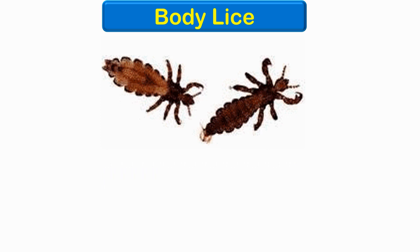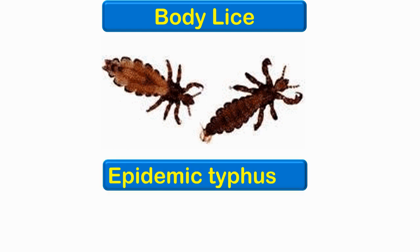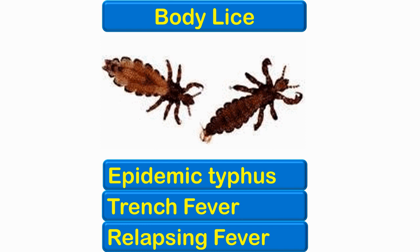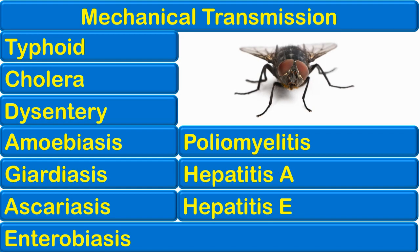This is a picture of lice. Humans can be infected by three types of lice: head lice, body lice, and pubic lice. Body lice are known to transmit some deadly infections like epidemic typhus, which was common among troops living in barracks where lice infestation was common. This infection is thought to be the reason why Napoleon had to stall his military campaign into Russia. Lice can also transmit trench fever caused by Bartonella quintana and relapsing fever caused by Borrelia recurrentis.